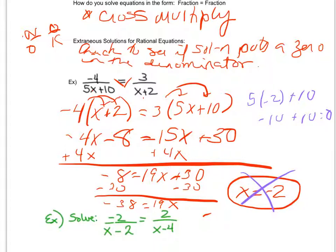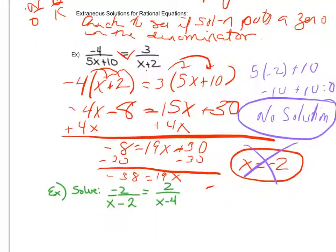Since that was my only solution, then my only solution was extraneous. My final answer for this example is actually no solution, since the only solution I got puts a zero in the denominator, and we cannot have zeros in the denominator.